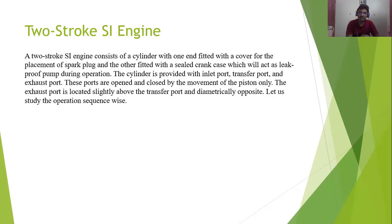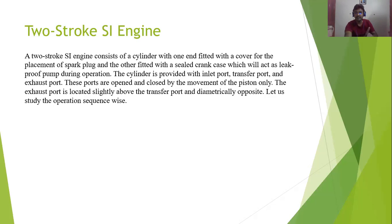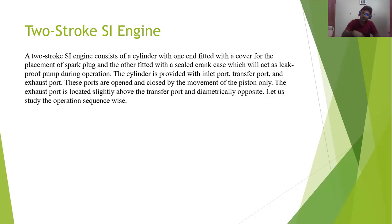In the two-stroke SI engine all ports are opened and closed by the movement of the piston. When the piston moves up and down, the particular ports will be opened and closed. In the two-stroke engine, both SI and CI, the inlet valve is placed in the crankcase. When air comes in, it goes to the top through the transfer port. When the piston moves up, the air gets compressed, and at that time the spark is produced.